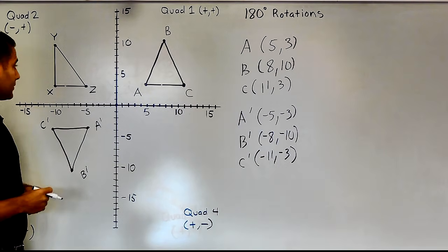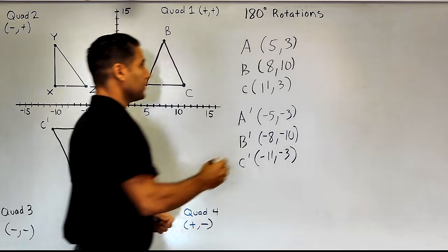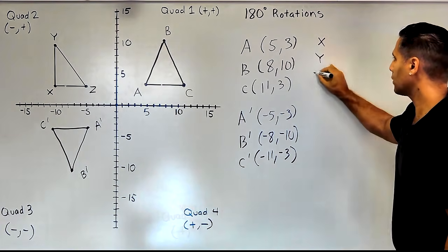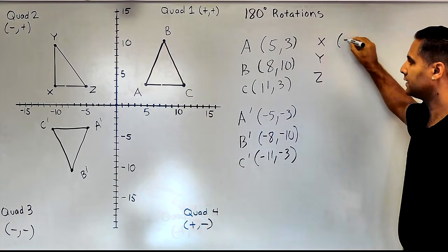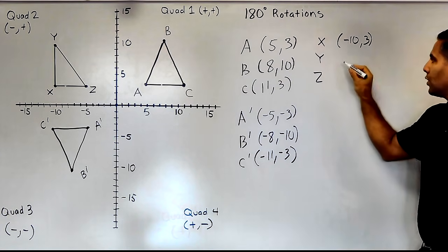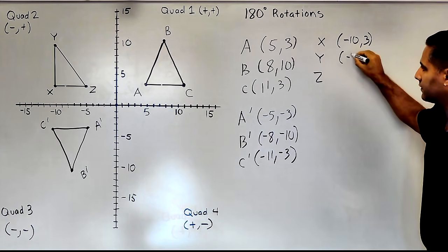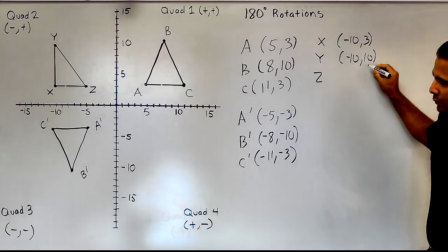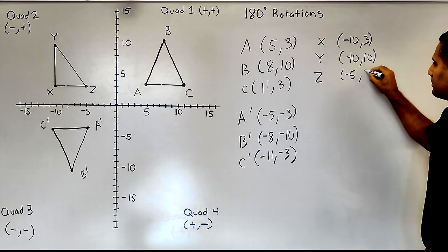Now let's do the same thing for triangle XYZ. First we identify the current coordinates. For point X, we are currently at negative 10, positive 3. For point Y, we are currently at negative 10 and positive 10. And for point Z, we are currently at negative 5, positive 3.